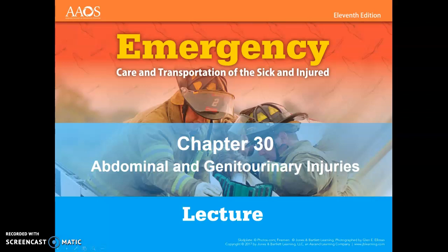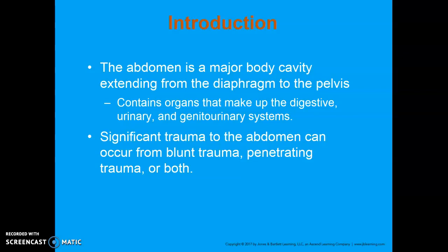This is Chapter 30, Abdominal and Genitourinary Injuries. The abdomen is a major body cavity that extends from the diaphragm all the way down to the pelvis and has several different systems that are intertwined. It's important for you as an EMT to know the anatomy of both the abdominal and pelvic cavities so that you can truly assess each injury for seriousness. Significant trauma can come from blunt and penetrating sources, individually or both. 10% of all trauma patients have some sort of genitourinary tract injury.